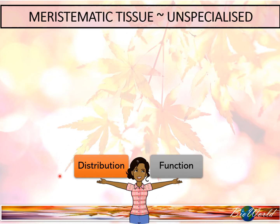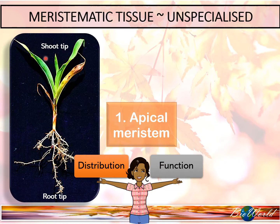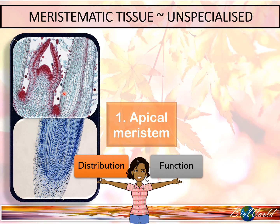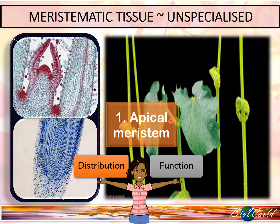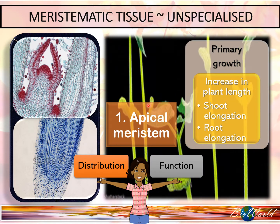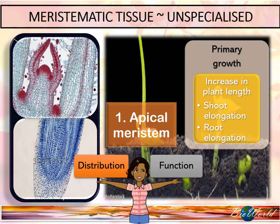There are altogether three types of meristematic tissues. The first one is the apical meristem, which is distributed at the shoot tip and the root tip. In the microscope images, you can see the structure of the cells at the shoot tip and at the root tip are small, typical of meristematic cells. The function of the apical meristem is for the primary growth of the plant, which includes the elongation of the shoot so that it can grow towards sunlight, and elongation of the root so that it can grow towards a water source.